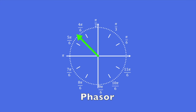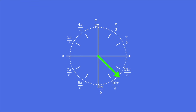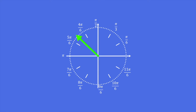A phasor or phase vector is a vector rotating on a fixed axis that is used to graphically represent a periodic signal or a function. It has many applications in physics, electrical engineering, etc.